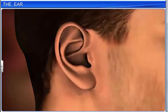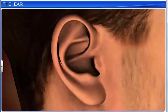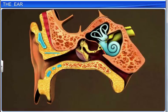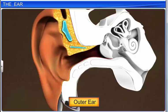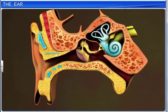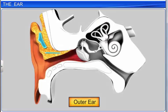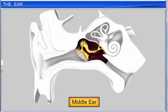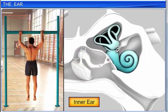The ear is an important organ that not only assists in hearing, but also helps the body maintain balance. It can be divided into three sections: the outer ear, the middle ear, and the inner ear. The outer and middle ear structures persist only in hearing, while the inner ear also helps to maintain the body's equilibrium.